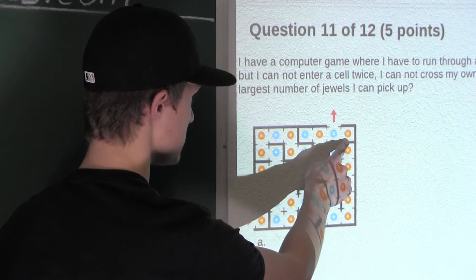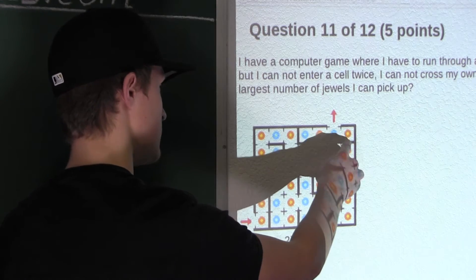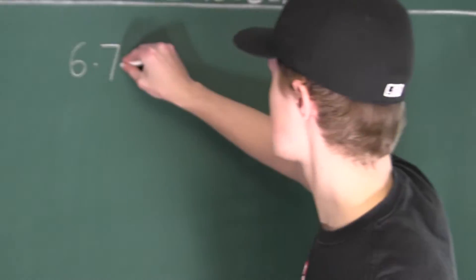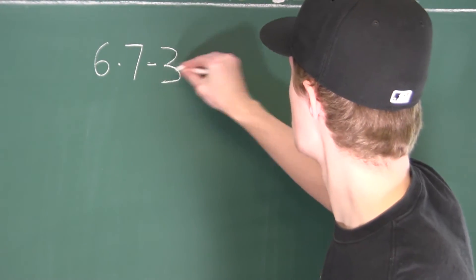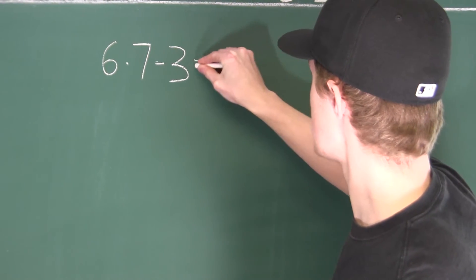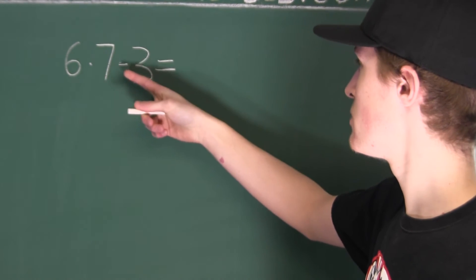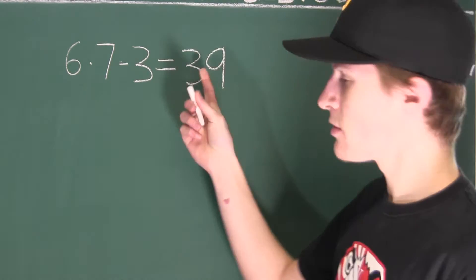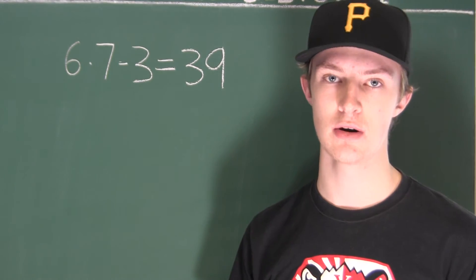And likewise here, this cell also only has 1 entrance, so we wouldn't be able to obtain that jewel. So these 3 jewels we already know we wouldn't be able to obtain. So now we can subtract this from our total number of jewels. Okay, now, this is equal to, well, 6 times 7 is 42, and 42 minus 3 is 39.